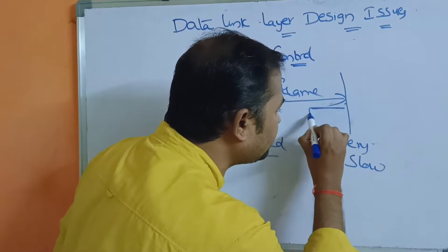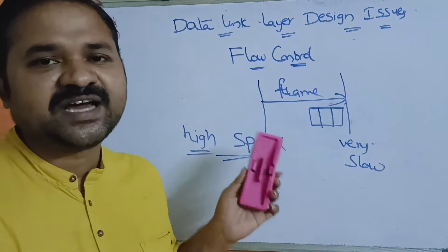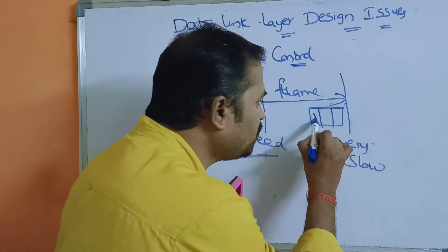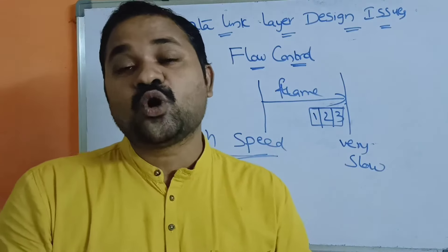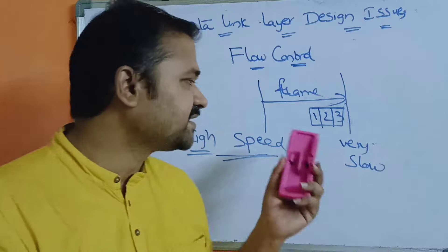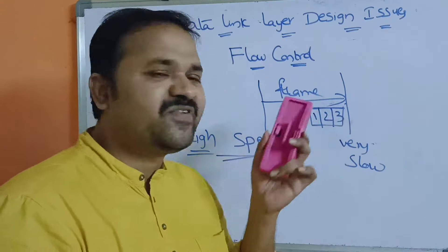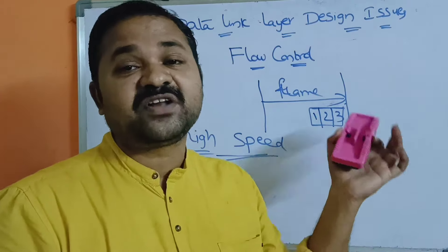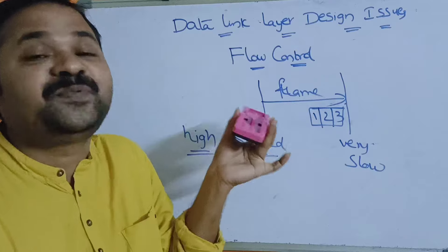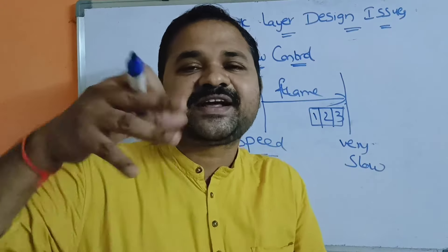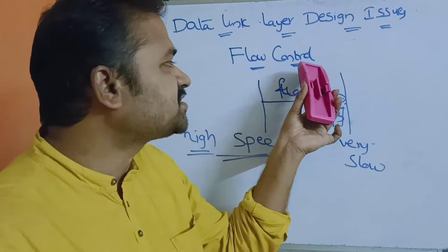Let us assume that at the receiver side we have a buffer, and the size of the buffer is three frames. Sender sends three frames to the receiver and those three frames are saved in the buffer. Whereas the receiver is processing the frames in a slower manner. In the meantime, the sender sends three more frames. The buffer is now full, so some of the frames in the buffer will be lost. This is the problem — if the sender sends data at higher speed, then some of the frames will be lost.